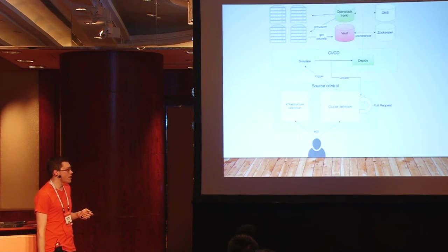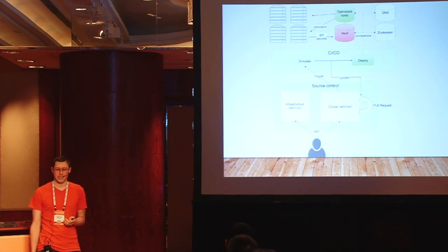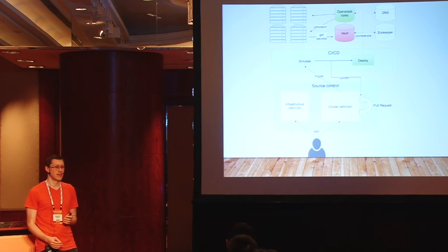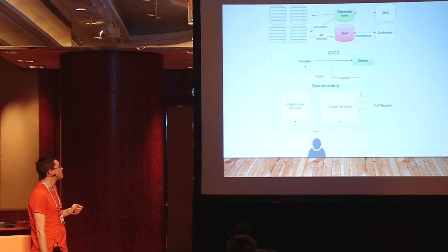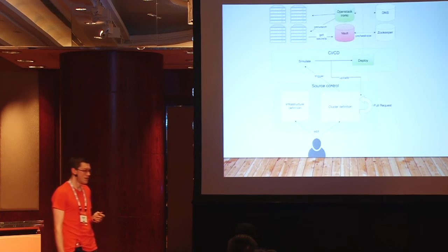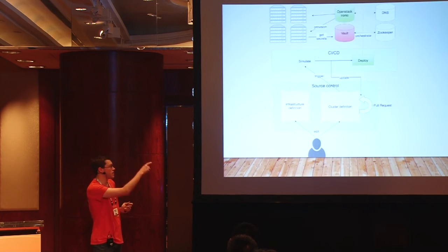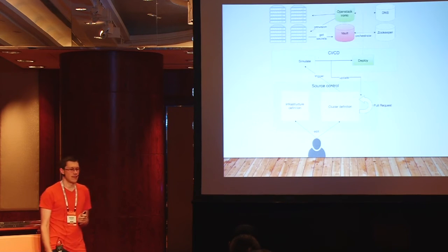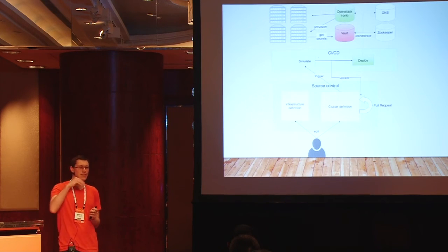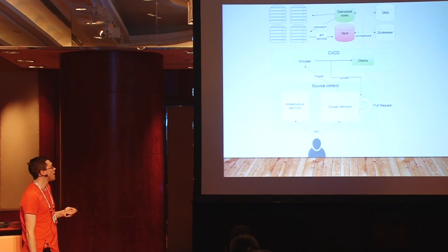When we make a change, it's declarative — we declare we now want a cluster that looks like Y instead of X; maybe three masters instead of five. This triggers a CI/CD process that figures out all the changes needed to get from X to Y, simulates those changes, and updates the pull request with what it's going to do. If you're happy with that and merge and approve the PR, it then goes and executes those changes.